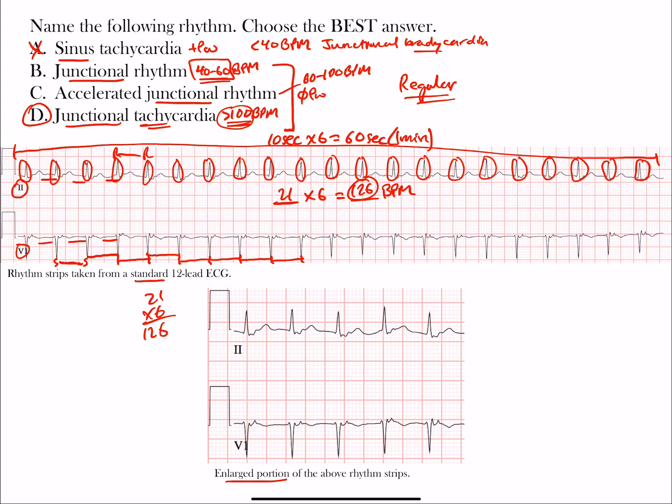We found the rate one way, but because this is a regular rhythm, we can use another method. Find an R wave on a thick line, then find the next R wave. Count the number of big boxes between them - one big box, two big boxes, and another one and a half. Because there's two big boxes, you do 300 divided by 2, which is 150. But it's a little beyond that, between 2 and 3 boxes. 300 over 3 is 100, so it's somewhere between 100 and 150.